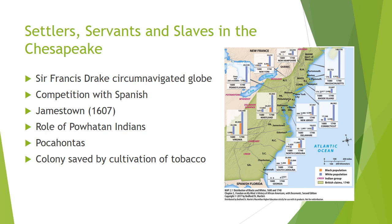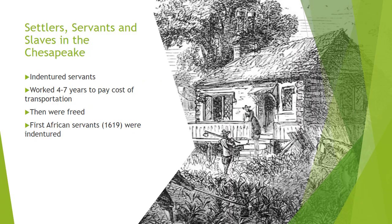Here you can see British claims in 1740 and the variable proportion of the population that is black and white in each place, along with the names of the Native American tribes.